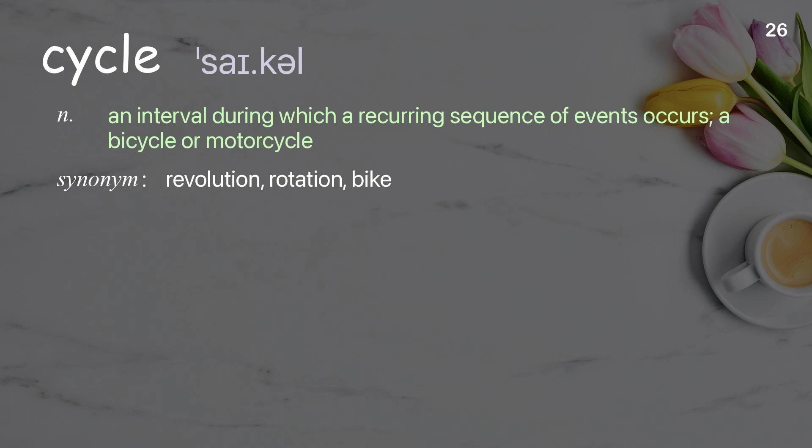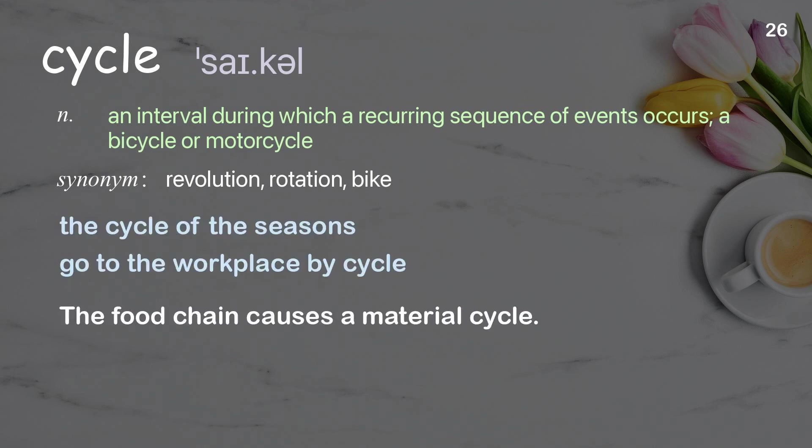Cycle — an interval during which a recurring sequence of events occurs; also a bicycle or motorcycle. Examples: the cycle of the seasons, go to the workplace by cycle. The food chain causes a material cycle.